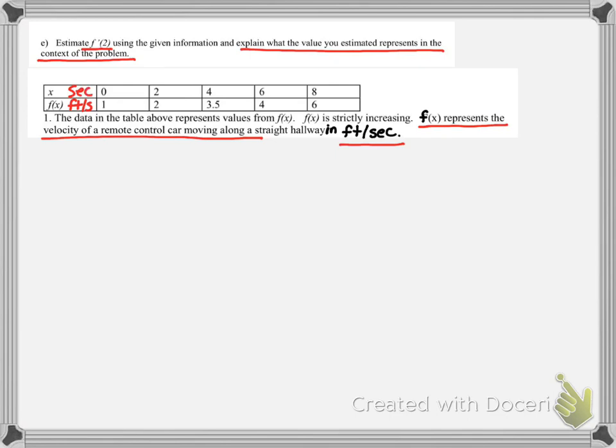And so if we were looking at our graph again, at 0 we are at 1, at 2 we are at 2, and at 4 we are 3.5.